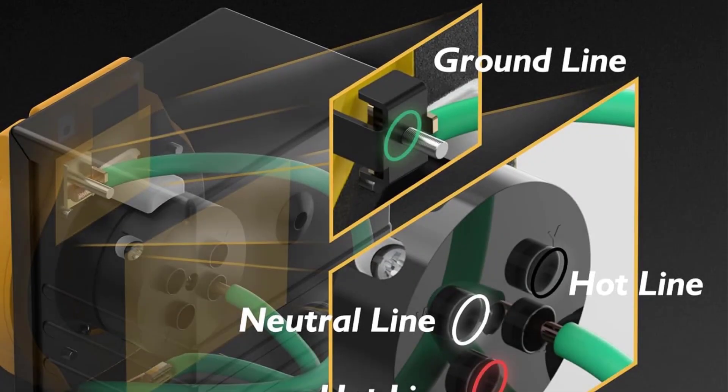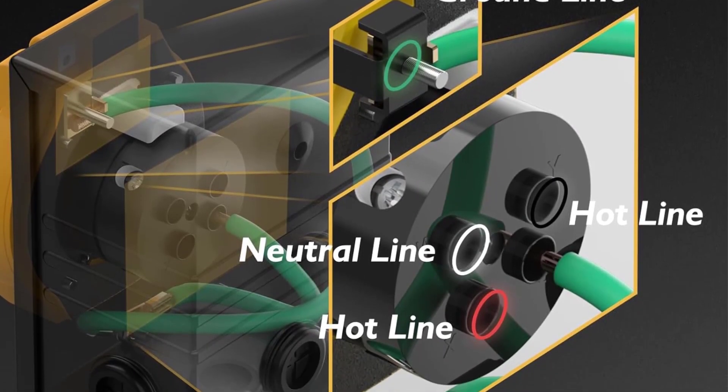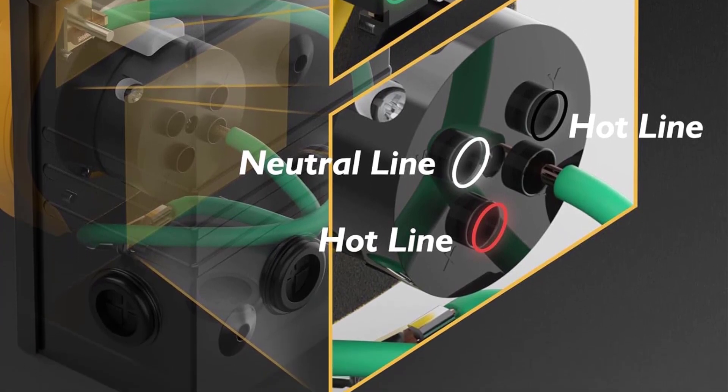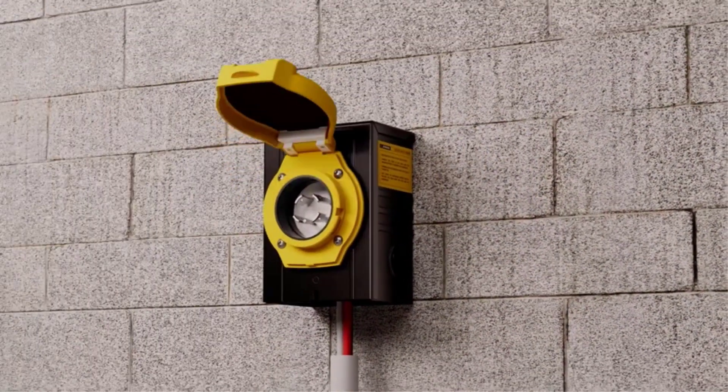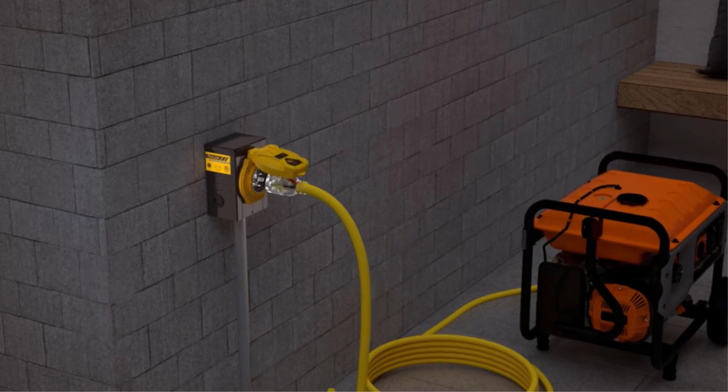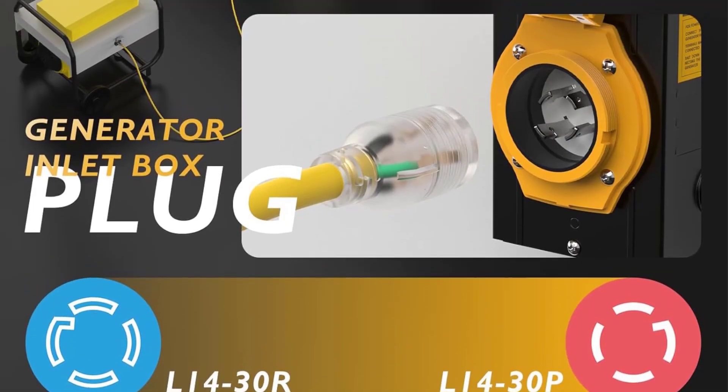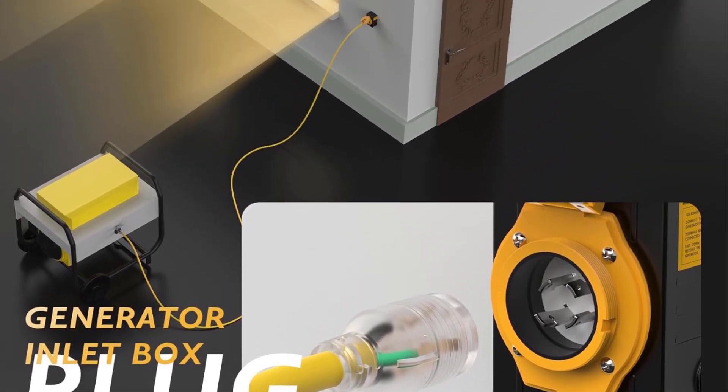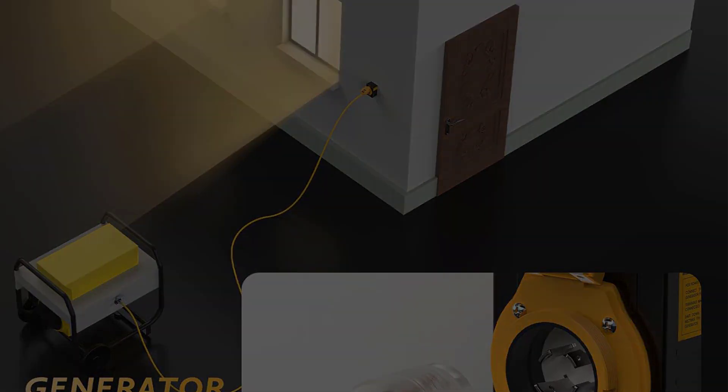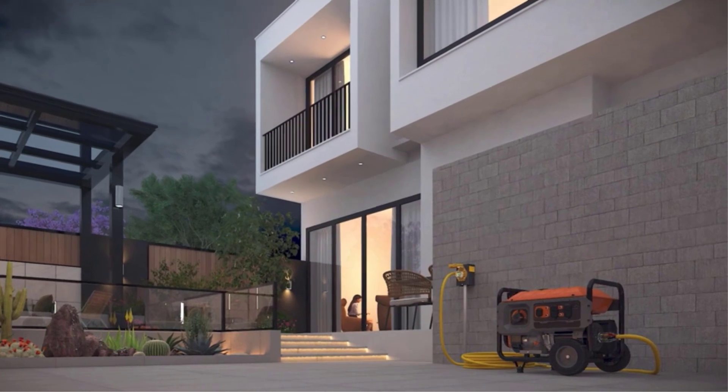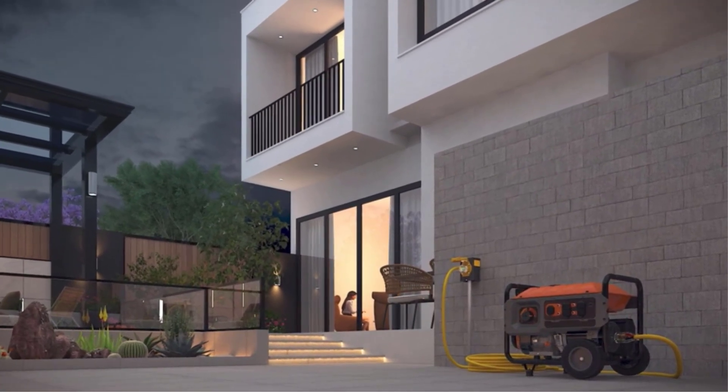The removable face cover allows for easy wiring access and installation, and the pre-drilled knockouts provide multiple connection options. The rust-proof metal cover ensures durability, and the green power indicator light provides a safety feature, letting you know when the unit is powered. Pair it with the Tuilium 30 Amp four-prong generator power extension cord for optimal performance.